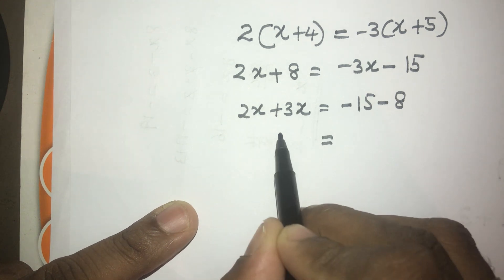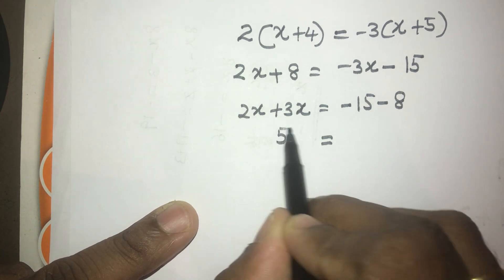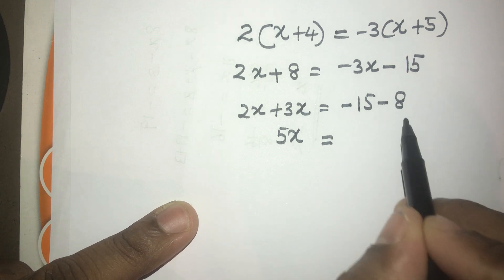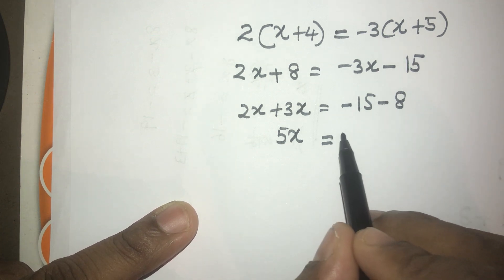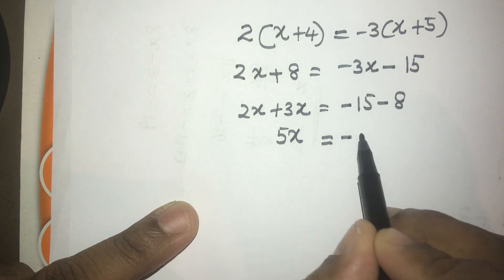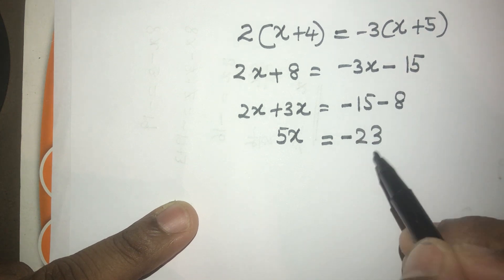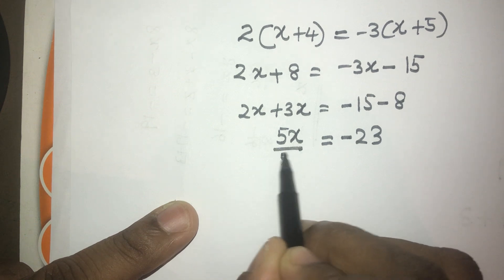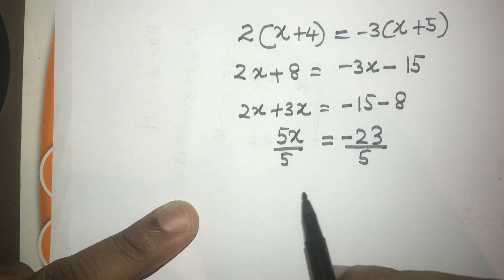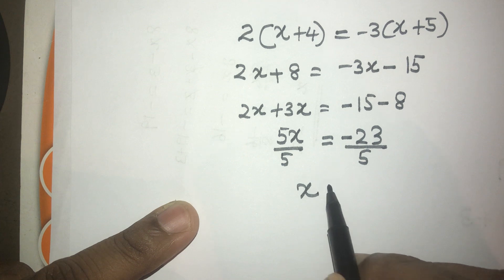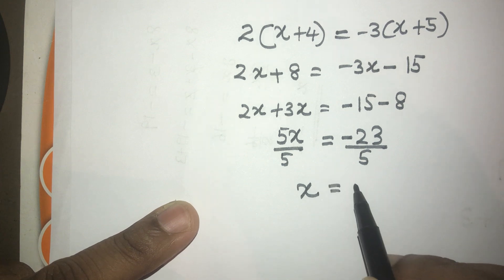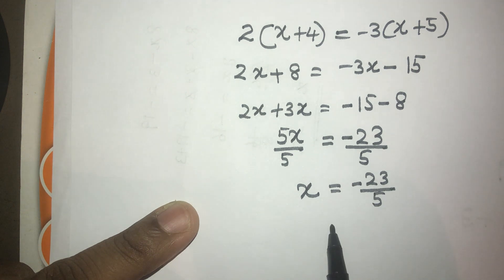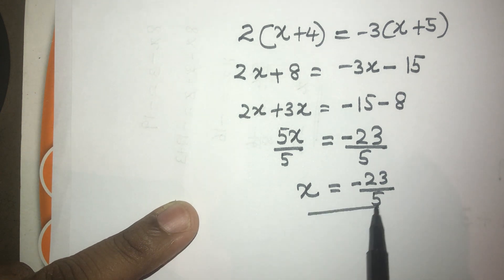2x plus 3x becomes 5x, and minus 15 minus 8 is minus 23. So we need to divide both sides by 5, giving us x equals minus 23 divided by 5. So this is the answer.